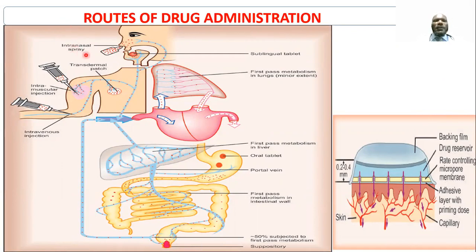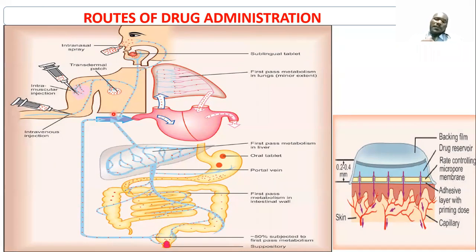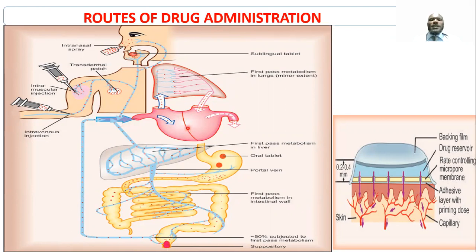For example, in case of the intranasal route, the drug is taken via the nasal cavities. Through this nasal cavity, the drug will bypass the first-pass metabolism or pre-systemic metabolism — it will not be metabolized in the GIT or in the liver, and will reach directly into the systemic circulation.